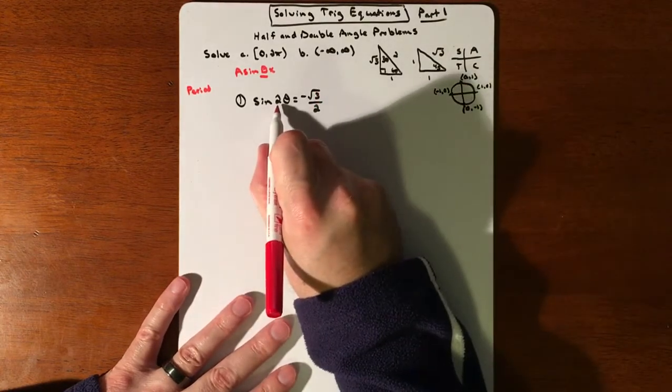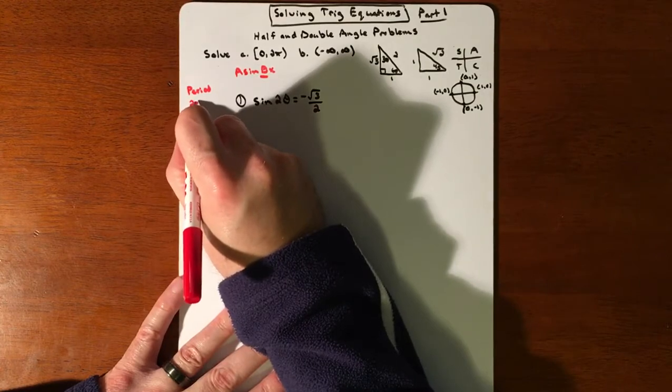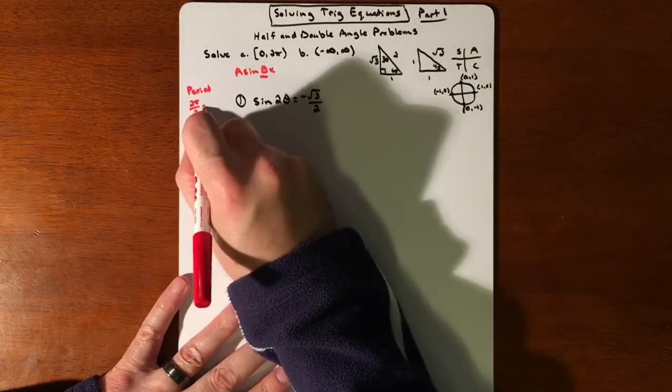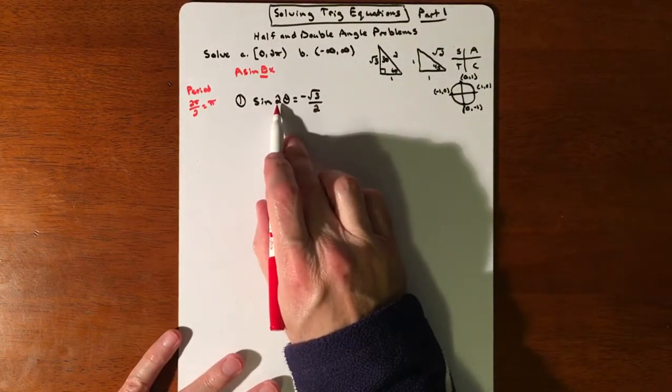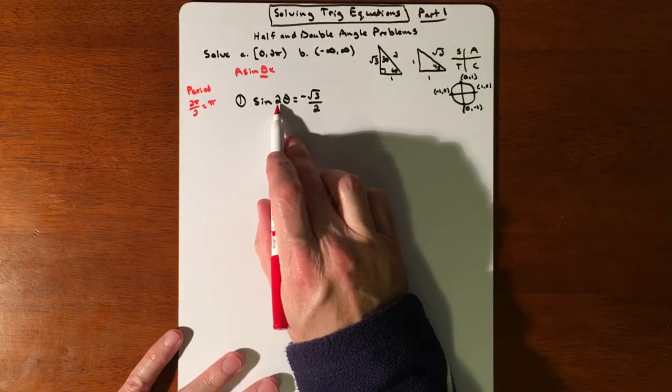So your period, that 2θ, that 2 is going to mess with your period. So normally your period is 2π, but we are going to divide it by 2. So your period is π. It also means whatever answers we were about to get, we're going to get twice as many answers that we should have gotten.